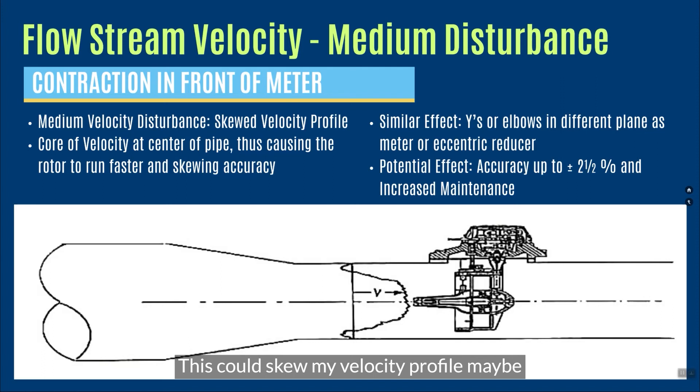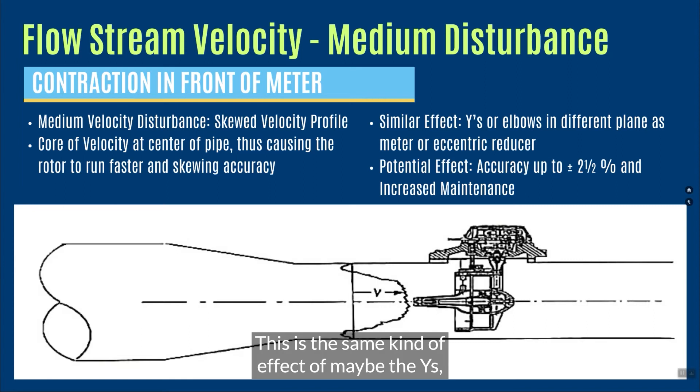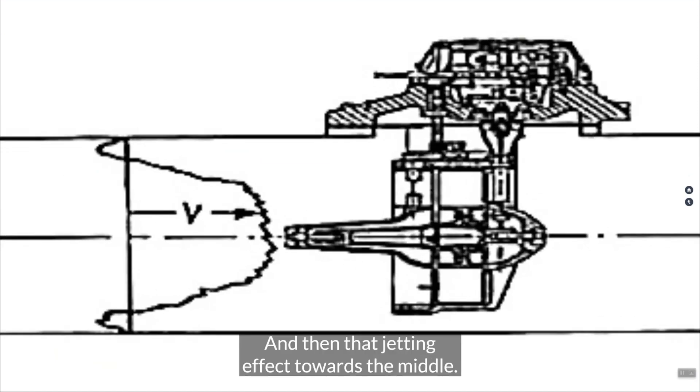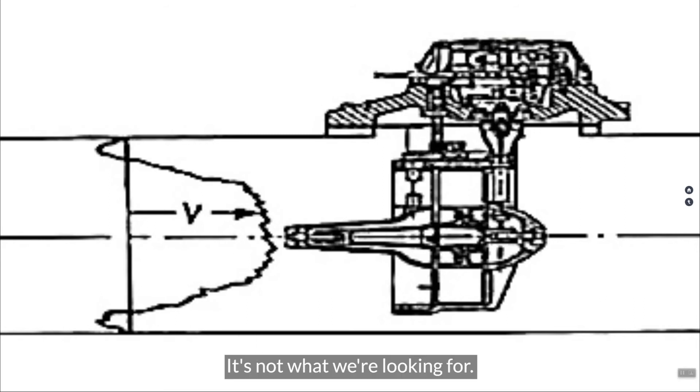This could skew my velocity profile maybe two and a half or three percent, plus or minus. This is the same kind of effect of the maybe the Ys or elbows or, in this case, eccentric reducer. What it's going to do that for that velocity profile here is it's going to give me sort of two eddy currents now towards the top and towards the bottom because of this contraction, and then that jetting effect towards the middle. It's not what we're looking for.